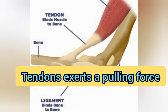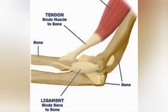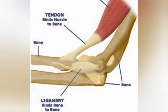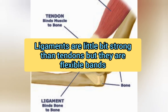The tendon exerts a pulling force because it is attached to the bone. Tendons are present with the muscles, and when muscles contract, the tendon exerts a force — in this way the bone and the joint are able to move.